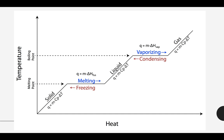Looking at that same diagram, we're going to use different equations at different points. If I have a solid undergoing a temperature change, I use q = m × specific heat × ΔT. Once I reach the melting point, I switch equations because all the energy is being used for a phase change — so q = m × enthalpy of fusion. Then once that phase change is complete, temperature changes from melting point to boiling point use q = m × specific heat × ΔT. At the boiling point, another phase change occurs using q = m × enthalpy of vaporization. Beyond that, the gas changes temperature again using q = m × specific heat × ΔT.